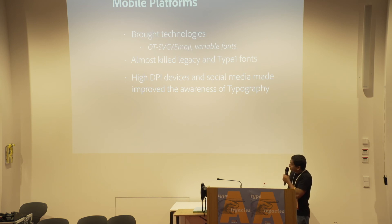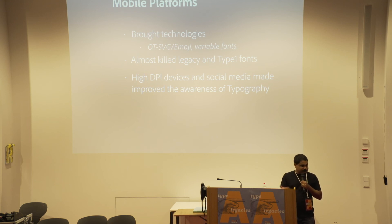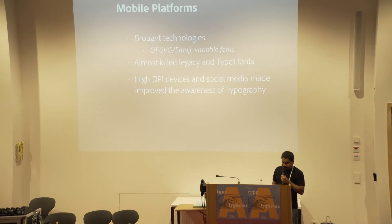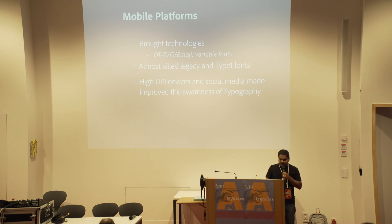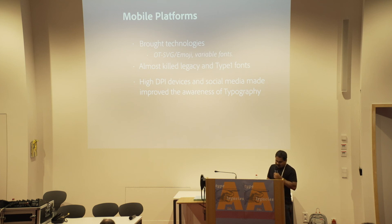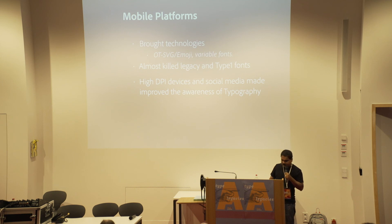The mobile platform was a big paradigm shift. It brought technologies like OpenType SVG, introduced to support color fonts — multiple colors in a single glyph — primarily driven by the need for emoji. Variable fonts were introduced partly to reduce the payload size of fonts downloaded to mobile platforms, and later we added arbitrary instances and other things. Mobile platforms also killed legacy fonts and Type 1 fonts — you can't get a legacy font on a mobile platform, and I don't think any web or cloud service supports Type 1 fonts.